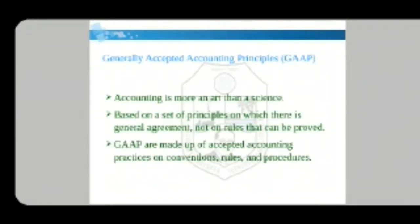As we have seen in double entry bookkeeping, accounting is not just a science — it is more an art than a science. It is not based on scientific concepts but on a set of principles based on general agreements approved by a number of accountants. These are not formal rules; they are principles on which there is general agreement. GAAP is made up of accepted accounting practices, conventions, rules, and procedures accepted by the accounting community.